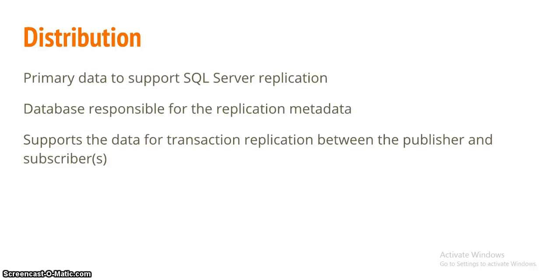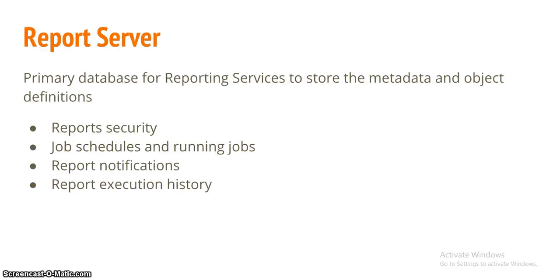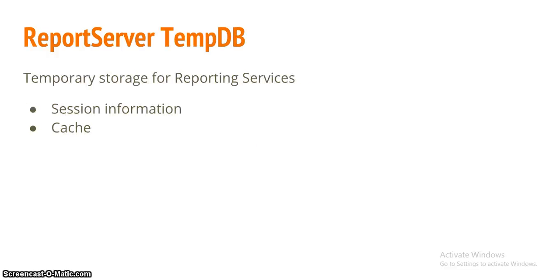The distribution database is the primary database to support SQL Server replication. It is responsible for replication metadata and supports data for transactional replication between publishers and subscribers. The report server database is the primary database for Reporting Services, storing metadata and object definitions including report security, job schedules, running jobs, report notifications, and report execution history. The report server tempdb provides temporary storage for Reporting Services, holding session and cache information.